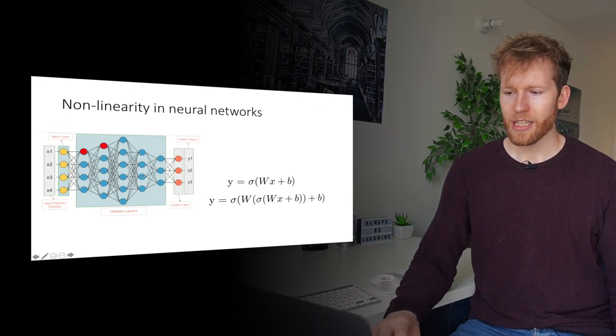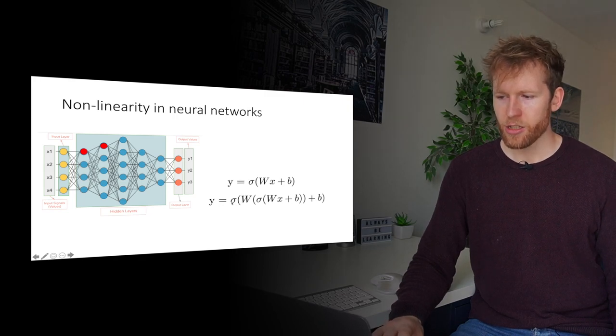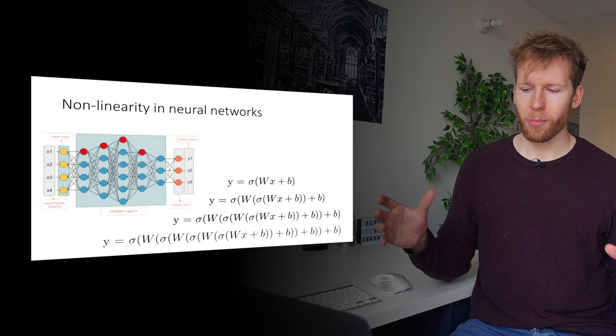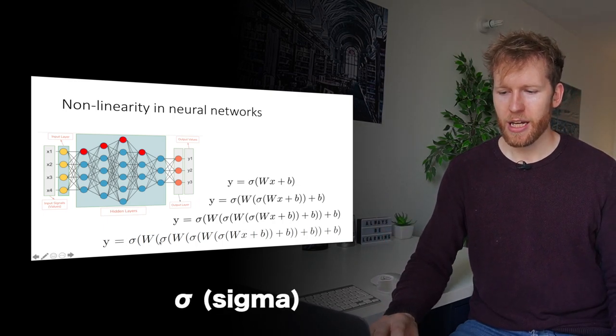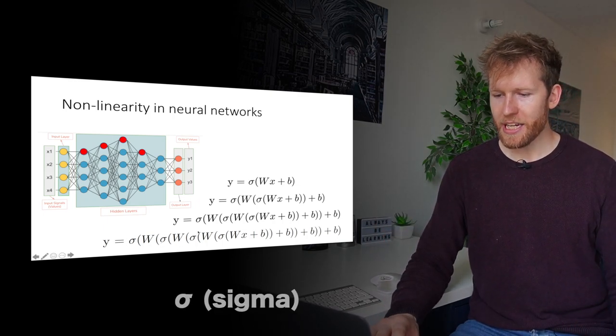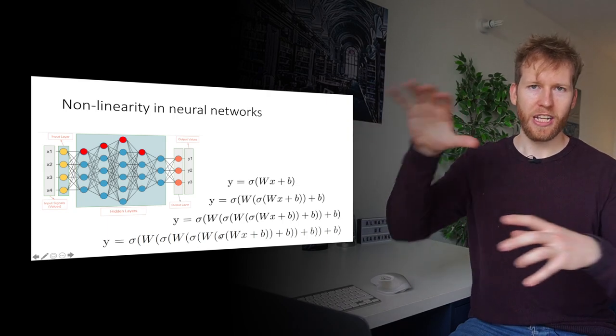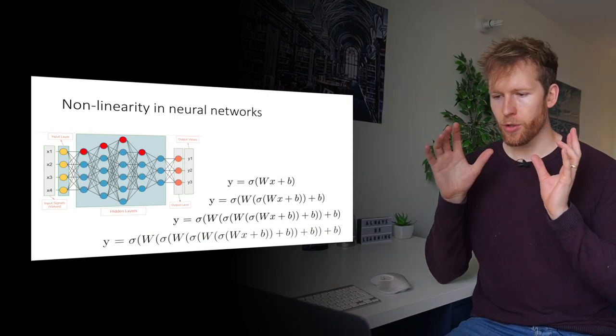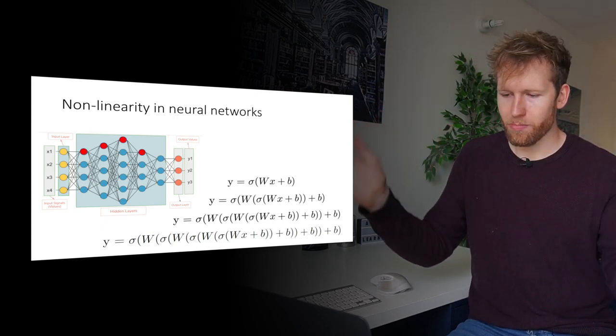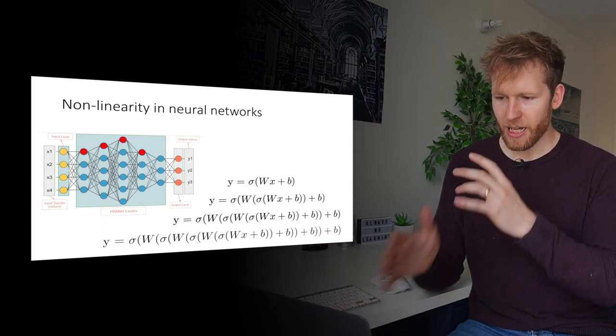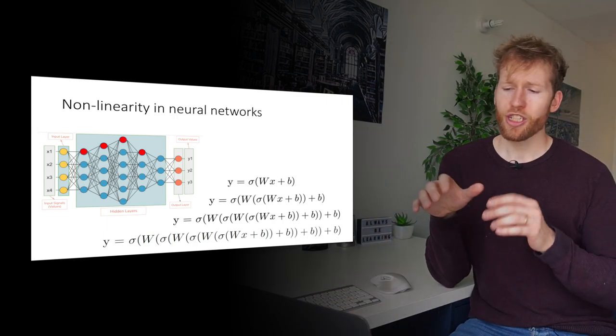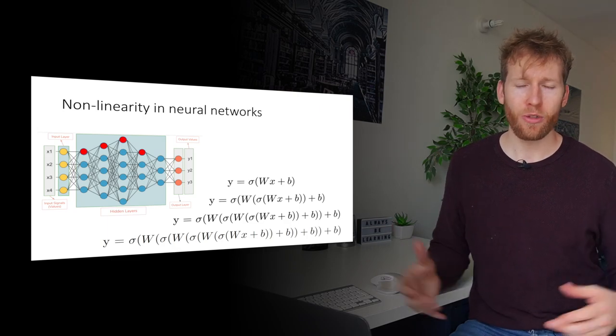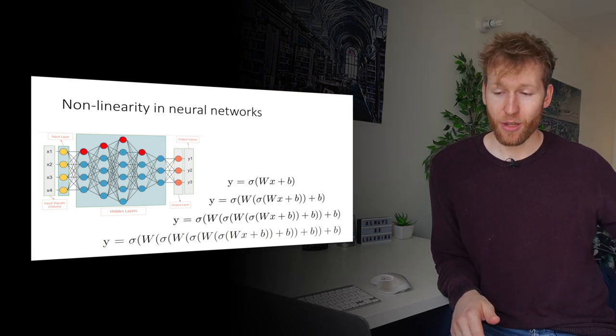If we then go into the next layer, essentially we're applying that transformation again, so it's already looking quite a bit more complicated. And as we keep progressing it's just going to get more and more complicated. Each of these, technically they're called sigmas, each of these basically shifts the data and applies this non-linear transformation. I appreciate for somebody who's not done a lot of maths that this is probably a bit abstract and perhaps confusing, but the key thing to appreciate is that by encoding this complexity within the neural network it enables us to find very complicated patterns in the data.